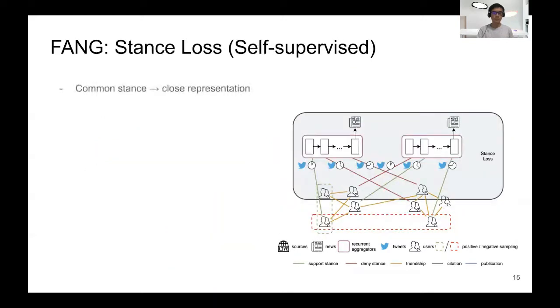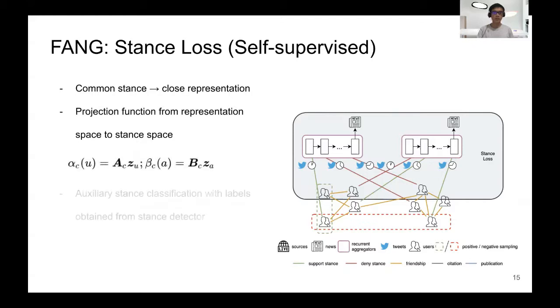In the second loss, the stance loss, this is based on our intuition that users sharing a common stance should have close representations. We first construct our projection functions from the representation space to the stance space. Then we add an auxiliary stance classification task with labels obtained from the stance detector. The stance loss can be formulated as a supervised softmax loss with cross-entropy.